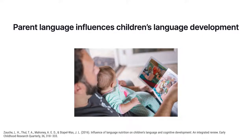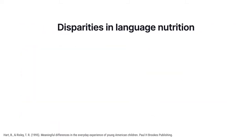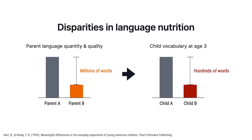Parent language plays a critical role in the language development of young children. Especially in a child's early years, the language they hear from their caregivers acts as language nutrition that enables them to form language ability. However, studies have found wide disparities in the quantity and quality of language provided by parents. By the age of 3, some children are exposed to millions fewer words than their peers. Insufficient language exposure has been linked to a wide gap in vocabulary and language ability, as well as a high risk of delayed language development.